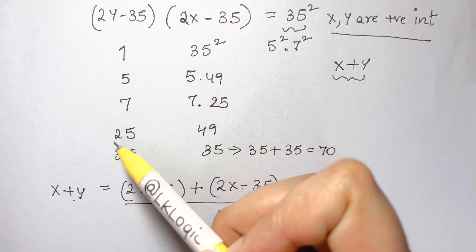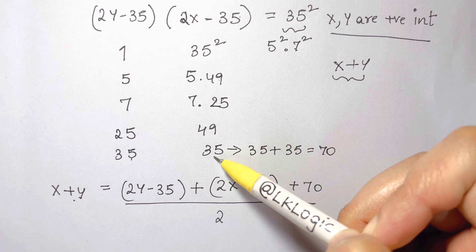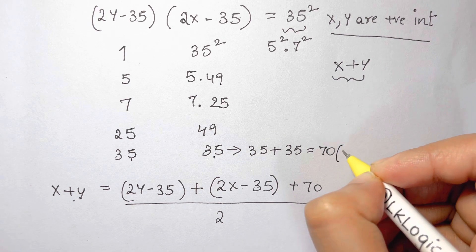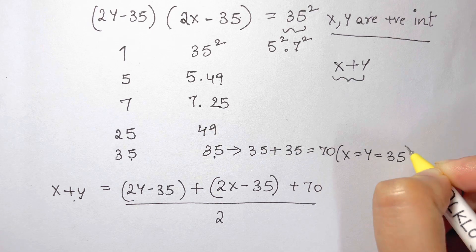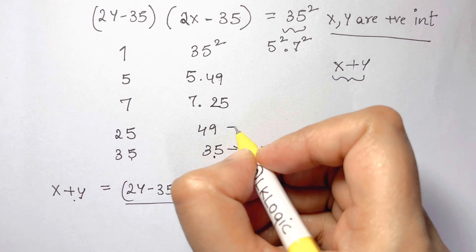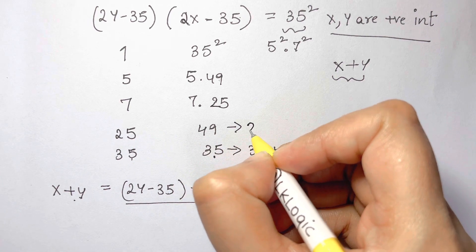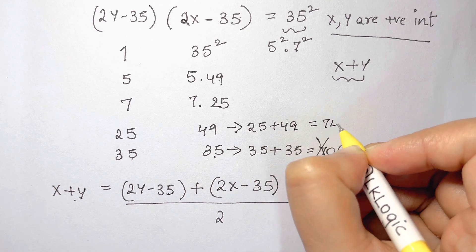If we take 2y minus 35 equals 35 and 2x minus 35 equals 35, we get x is equal to y is equal to 35. That is not possible. So the next minimum we can get is 25 plus 49 is equal to 74.